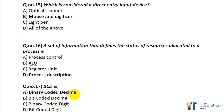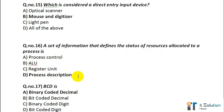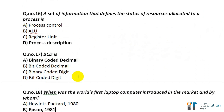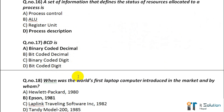Question number 16: A set of information that defines the status of resources allocated to a process is called — its correct answer is process description. Question number 17: BCD is — its correct answer is binary coded decimal.